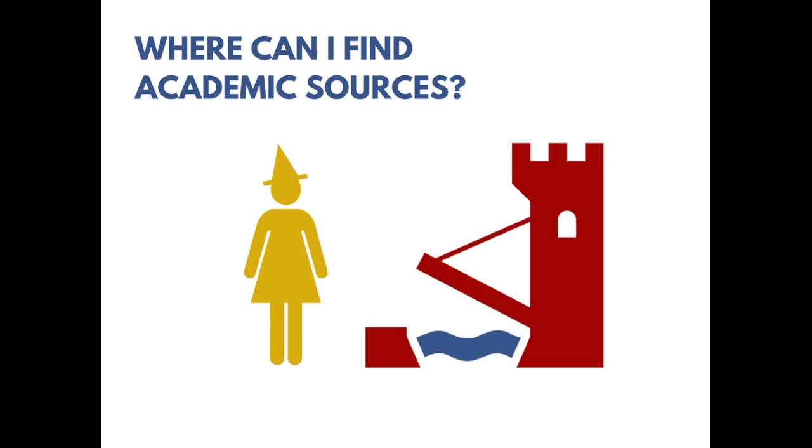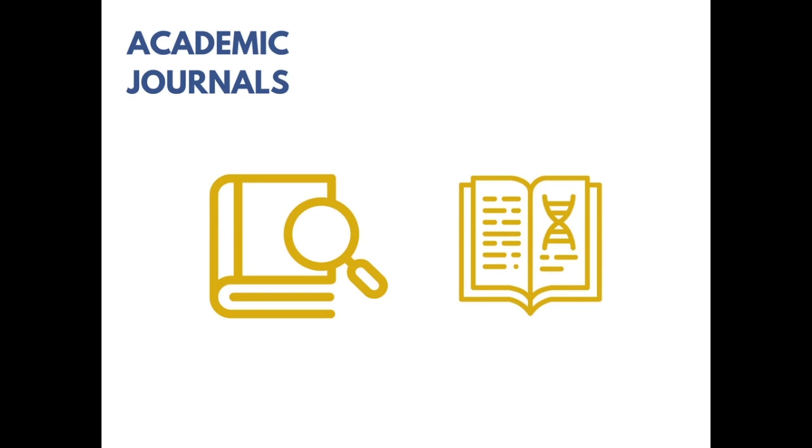Academic articles are usually published in academic journals, which are really just very specialized nerdy magazines with titles like the Journal of Molecular Biology or American Literary History.